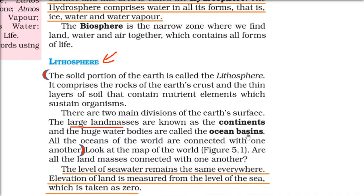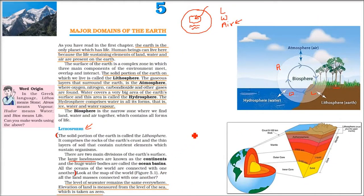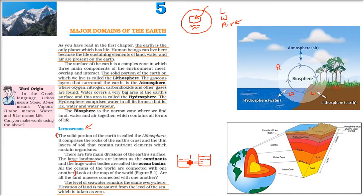A huge water reservoir is called an ocean basin, or mahasagar. One important thing: all the water of the globe is connected. Like two tumblers — if one has more water and one has less, and you join them, the water reaches equilibrium. Since all ocean basins are interconnected, the water level is always equal everywhere.